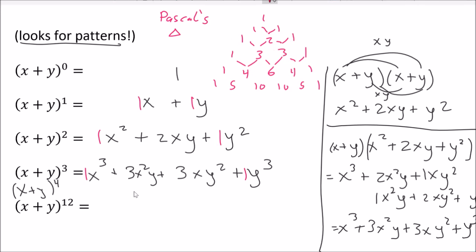Let's go back down and see what other patterns we notice. It's easier to see if I put a 1 on terms that don't have an exponent shown. If you look at any individual term, what can you notice about all the exponents? The exponents will always add up to the power. For x squared: 2 matches 2, and 1 plus 1 matches 2. For the cubed row: 3 matches 3, 2 plus 1 matches 3, 1 plus 2 matches 3, and 3 matches 3.